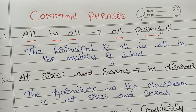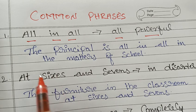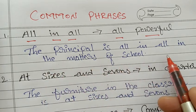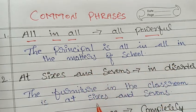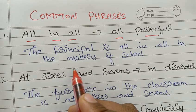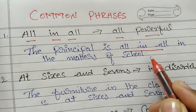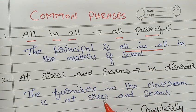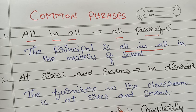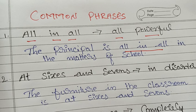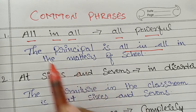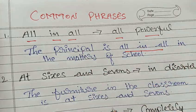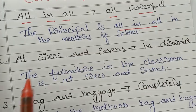The meaning of 'all in all' refers to the all powerful, supreme person — the one who has the final call. For example: 'The principal is all in all in the matters of the school,' which means the principal is the supreme authority in the school. Or we can say 'My mother is all in all in the kitchen' — very powerful, very expert, the supreme. That is the meaning of 'all in all.'